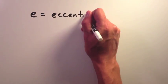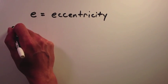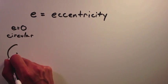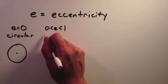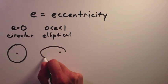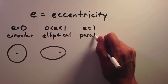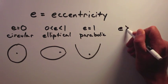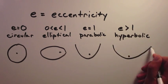E is the eccentricity of the orbit. An eccentricity of zero is a circular orbit. An elliptical orbit has an eccentricity greater than zero but less than one. A parabolic orbit has an eccentricity equal to one, while hyperbolic orbits all have eccentricities greater than one.